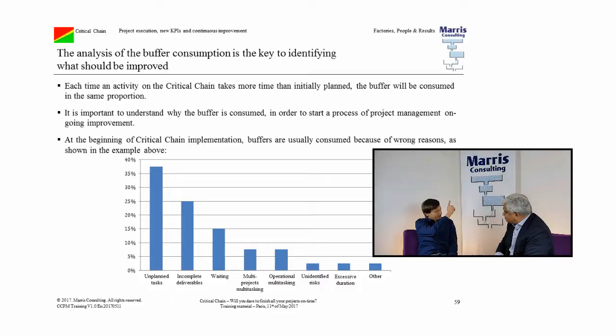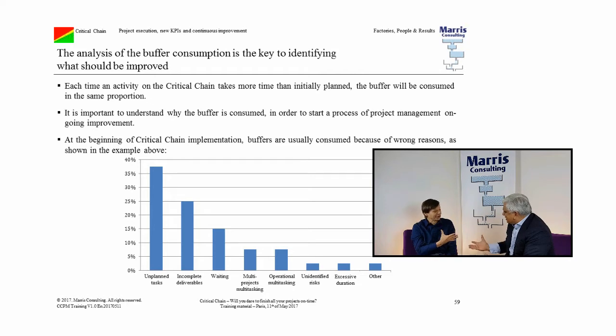In the real world, things are more complex. Once you've done critical chain — planned, executed, and done your buffer management — you're meant to look at how and why you consume your buffer. You do a Pareto chart of buffer consumption reasons. Logically, given what we're saying, the first most important cause of buffer consumption should be the variability of task times. But as you and I know, it's never in the first five items of that Pareto chart.